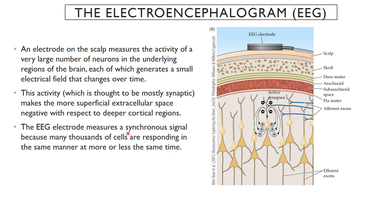The EEG measures the synchronous signal from not just a few neurons — it's actually measuring the coordinated activity of thousands of neurons responding in a similar manner more or less across the same time. It can do this across the scalp. All you need to do is place the electrode onto the scalp and you can detect brain activity, as long as the activity is synchronous.